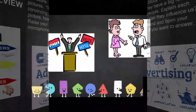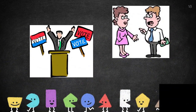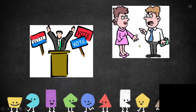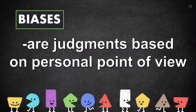In photo number three you can see the word 'vote' — this relates to politicians. And the next photo shows somebody who wants to borrow money from somebody. We will now be talking about biases.